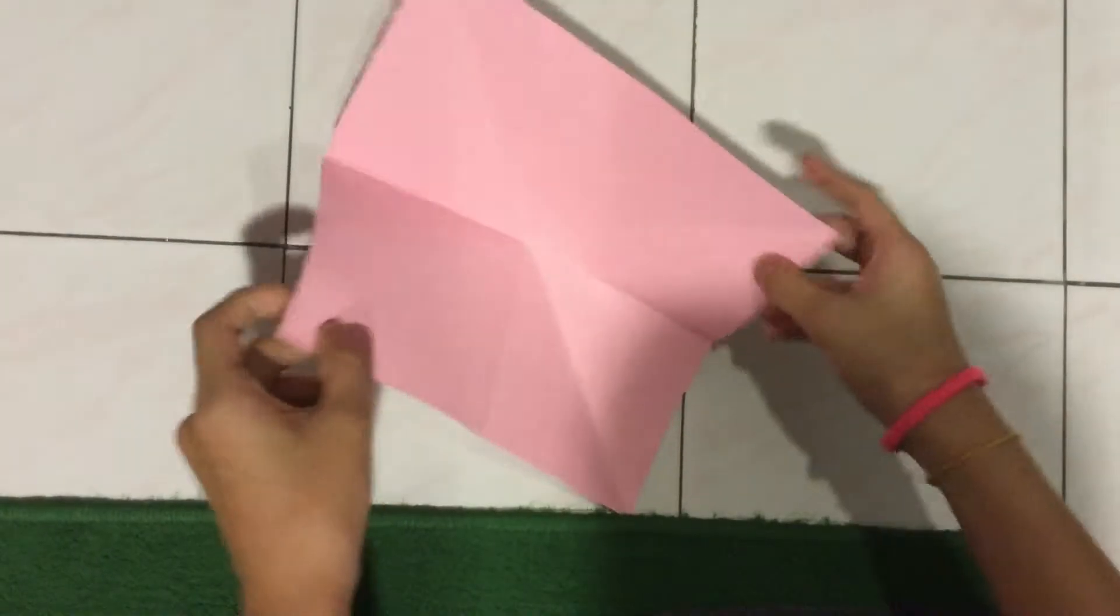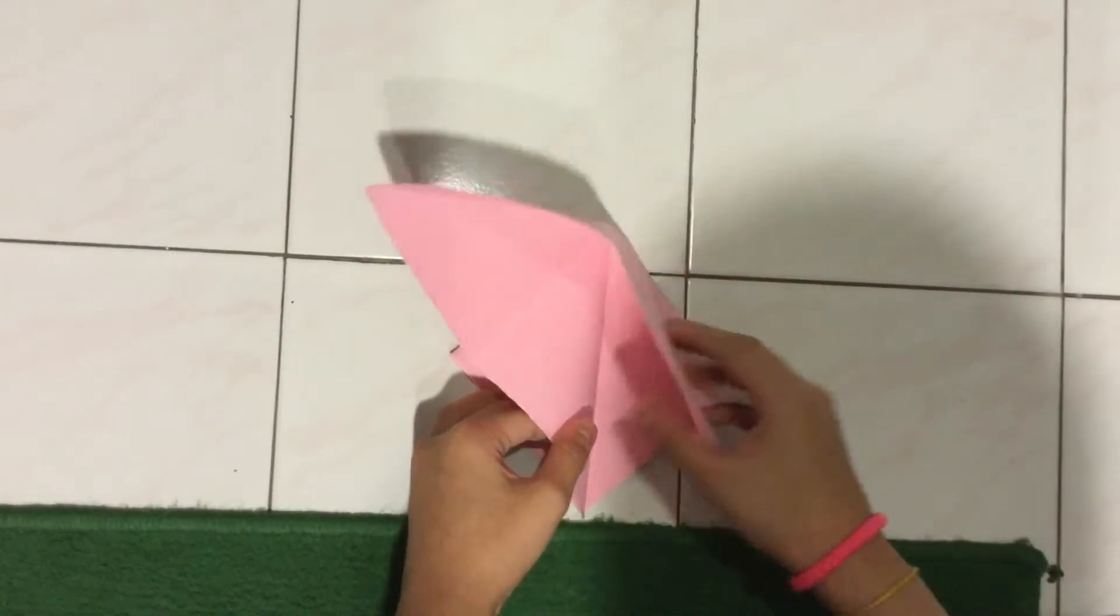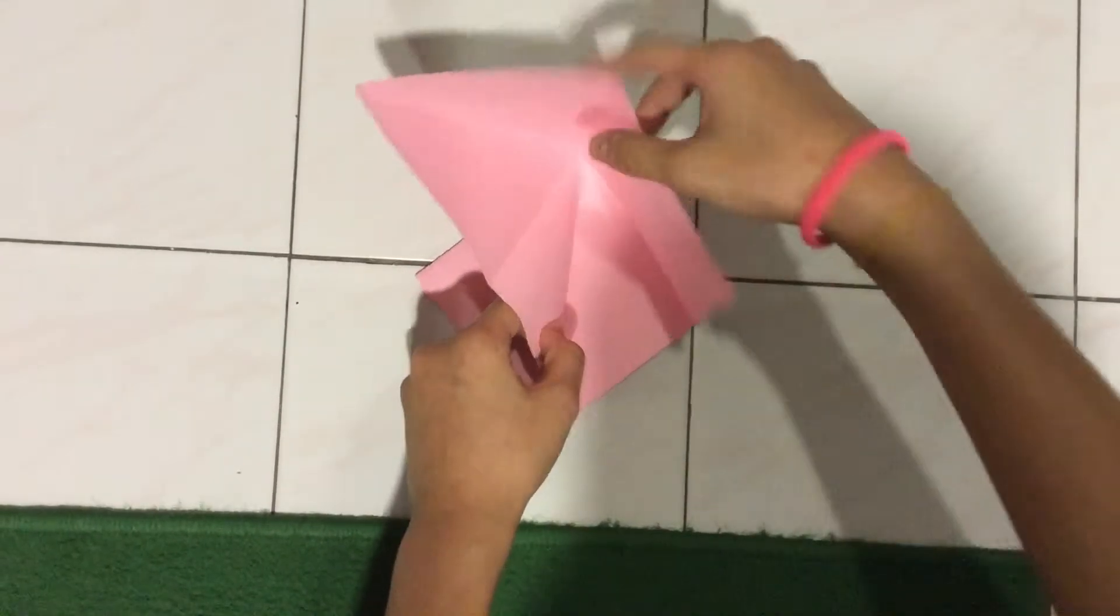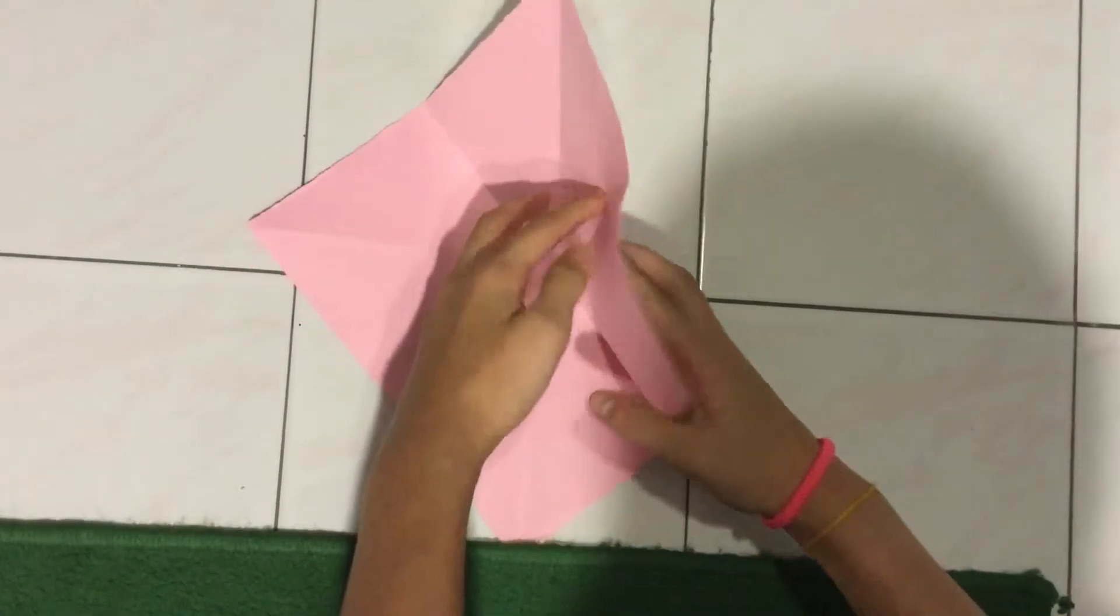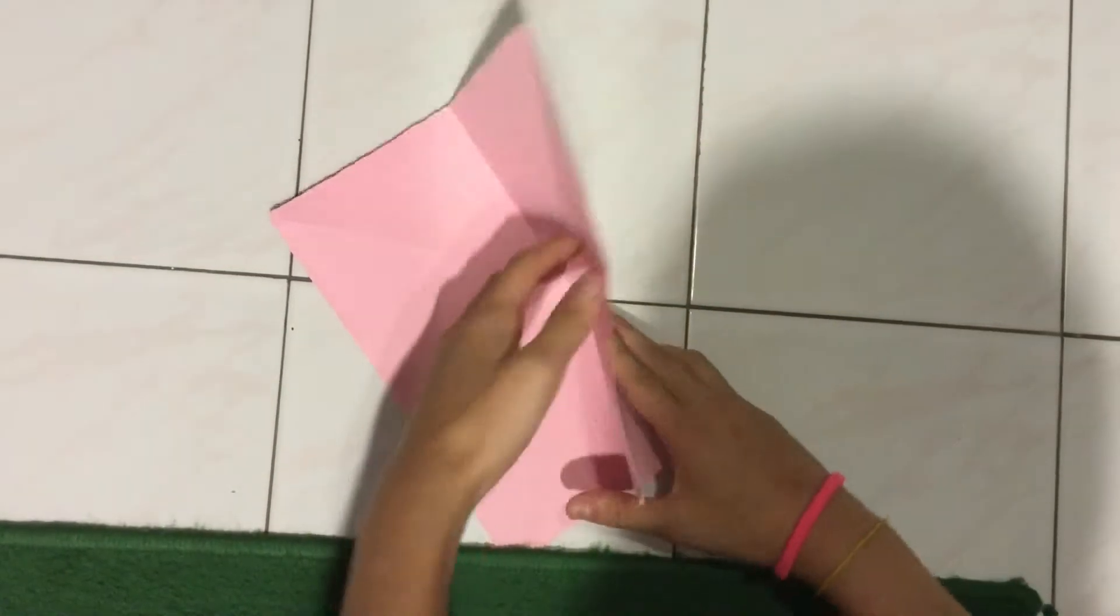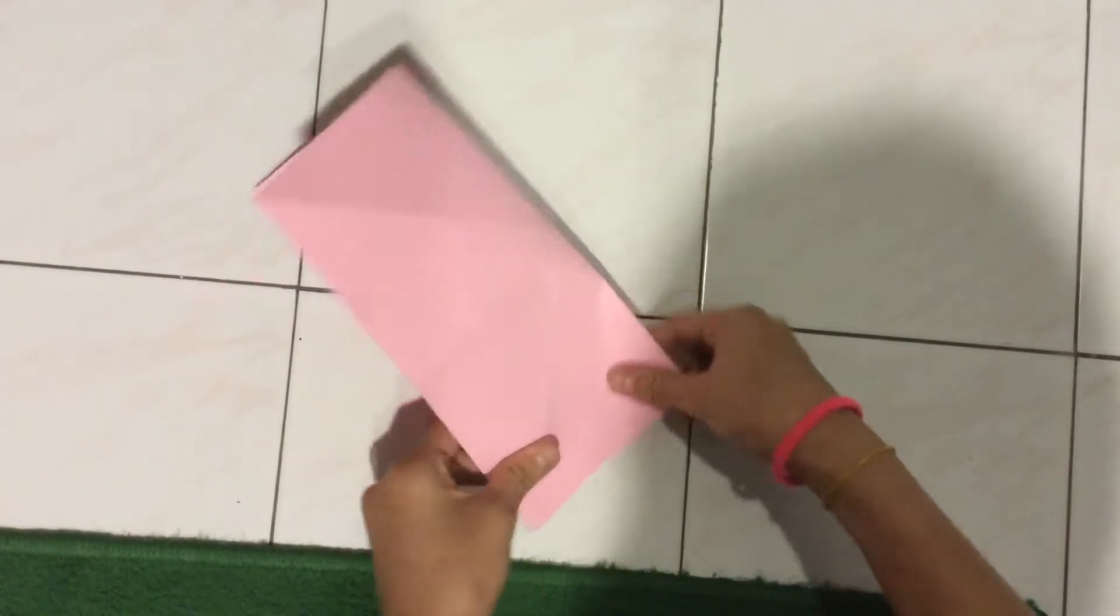Then you want to bring this forward and this in, and then this one forward and in. So let me redo that for you. So basically you want to put that, just fold it a bit forward and in.